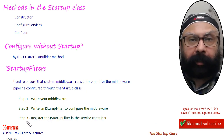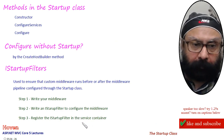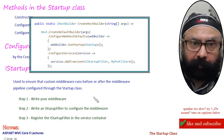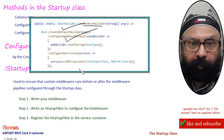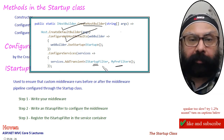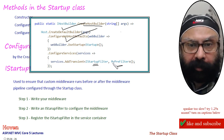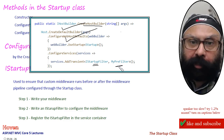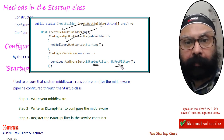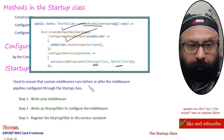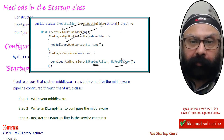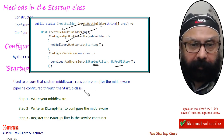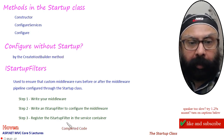Once configured, step 3 is to register the IStartupFilter in the service container. Registration is done through CreateHostBuilder in the program.cs file. CreateDefaultBuilder and ConfigureWebHostDefaults are already there, and you add ConfigureServices where you add a transient IStartupFilter for MyPreFilter. This filter is added to the service container, and as it tells us to use our custom middleware, that middleware will run first and then the standard pipeline will go. The output will first come from our custom middleware and then from the standard pipeline.